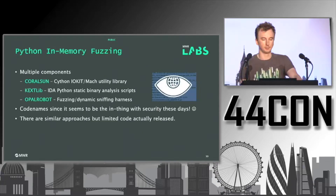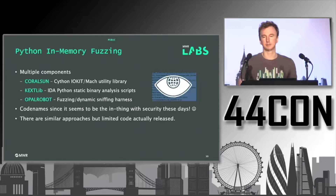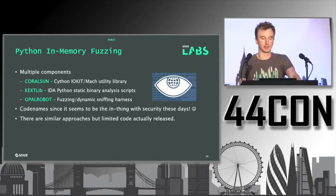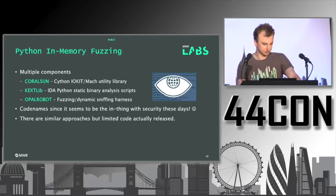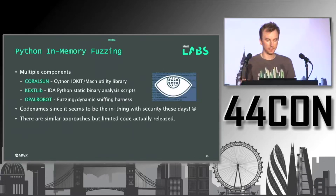The approach I took was to combine static binary analysis — extracting as much information as possible from the binaries themselves — with a dynamic component as well. I also wanted to do as much as I could in memory, because touching disk slows down your fuzzer and getting more execution cycles makes finding bugs easier. For this fuzzer I developed three components: CoralSun, an IOKit Mach library for calling IOKIT functions from Python; KXT lib for extracting data from KXTs and device drivers; and the fuzzer itself called Opal Robot, the fuzzing and sniffing component.